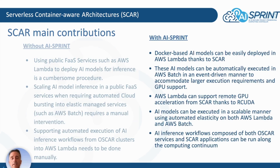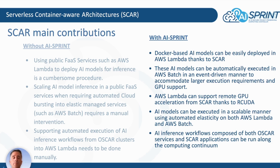With AI Sprint, the introduction of the SCARP framework allows Docker-based AI models to be easily deployed in AWS Lambda. These AI models can be automatically executed in AWS Batch in an event-driven manner, accommodating larger execution requirements for inference requests that do not fit within the strict AWS Lambda computing requirements, even supporting GPUs.